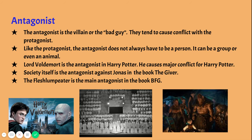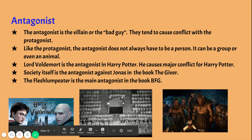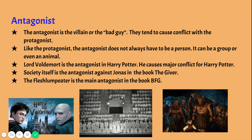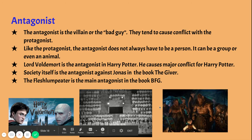The second character you meet is the antagonist — the complete opposite of the protagonist. The antagonist is the villain or the bad guy, and they tend to cause conflict with the protagonist. Just like the protagonist, the antagonist doesn't always have to be a person — it can be a group or an animal. Lord Voldemort is the antagonist in Harry Potter. In The Giver, society itself is the antagonist — a group rather than a person. And the Fleshlumpeater is the main antagonist in BFG.